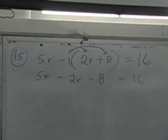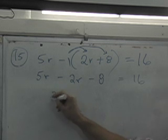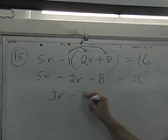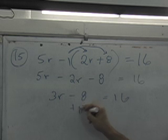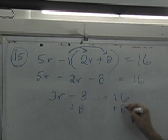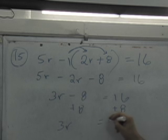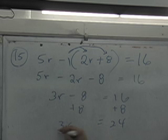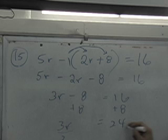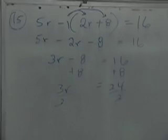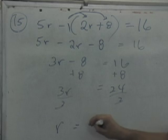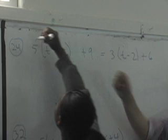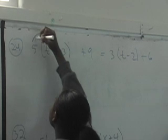And then you do 5R minus 2R, which equals 3R. Minus 8. And then you have to do the opposite to 8, so you add 8 to 16 also. And so then it becomes 3R. Keep going. You got it. Can you say it? R equals 8. Good job. Rainbows. No rainbows. There you go. Bless you. You're so welcome. The rainbows.